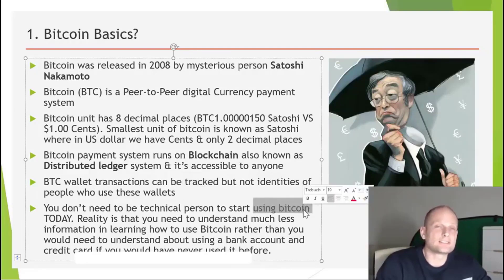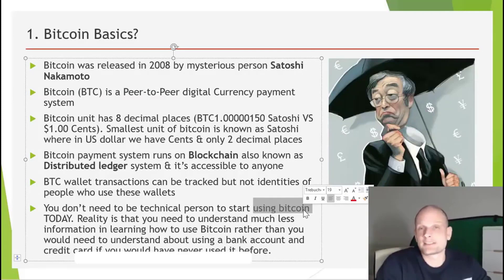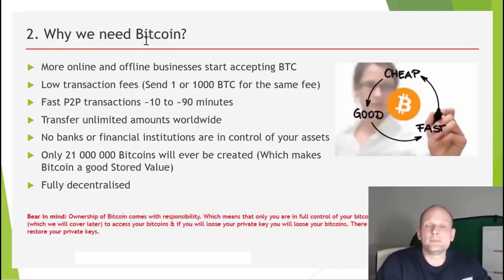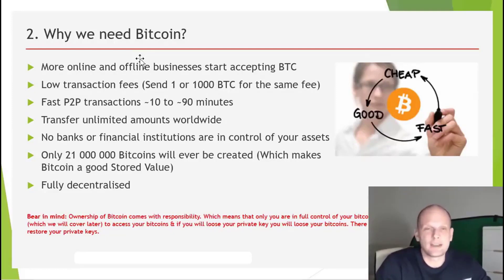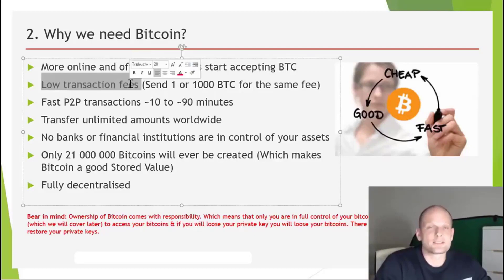You don't need to be a technical person to start using Bitcoin — many people think you need to be an IT guy, but that's a common misconception. I'll also show you in these lessons how to buy and sell Bitcoin. As for why we need Bitcoin: it gives us freedom and full control of our money. There are no banks that can block us, stop our transactions, or access our accounts. Nobody can access your Bitcoin except you, because only you have the private key to your wallet.